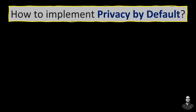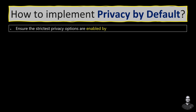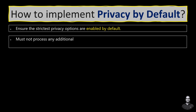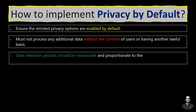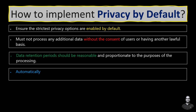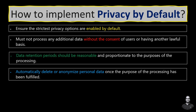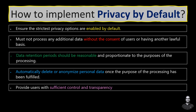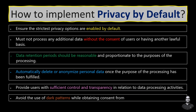To successfully implement the privacy by default approach, organizations must ensure the following measures at minimum: ensure the strictest privacy options are enabled by default; do not process any additional data without user consent or another lawful basis; data retention periods should be reasonable and proportionate to the purposes of processing; automatically delete or anonymize personal data once the purpose of processing has been fulfilled; provide users with sufficient control and transparency in relation to data processing activities; and avoid the use of dark patterns when obtaining consent from users. When designing cookie consent banners, it is crucial to ensure that users can make informed choices without feeling pressured or misled.